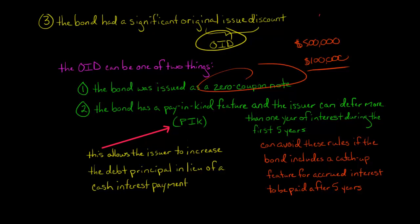The second scenario is a little more complicated with this original issue discount. Some bonds have a thing called a pay-in-kind PIK feature. Pay-in-kind, it could be set up a number of ways. But one way is that the issuer says, okay, when interest comes due, I have the option of instead of paying cash for the interest, I could just say, I'll issue more debt.